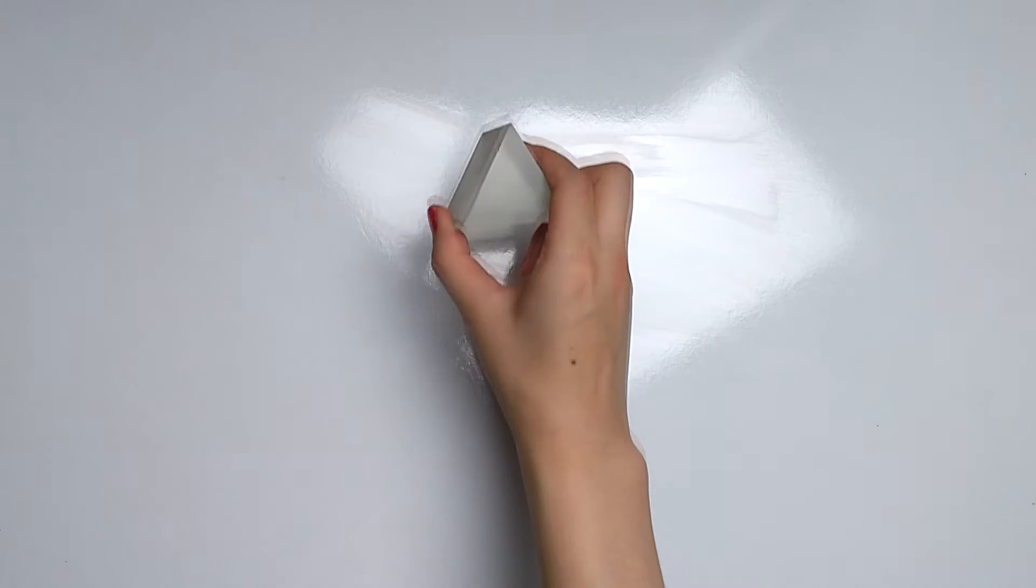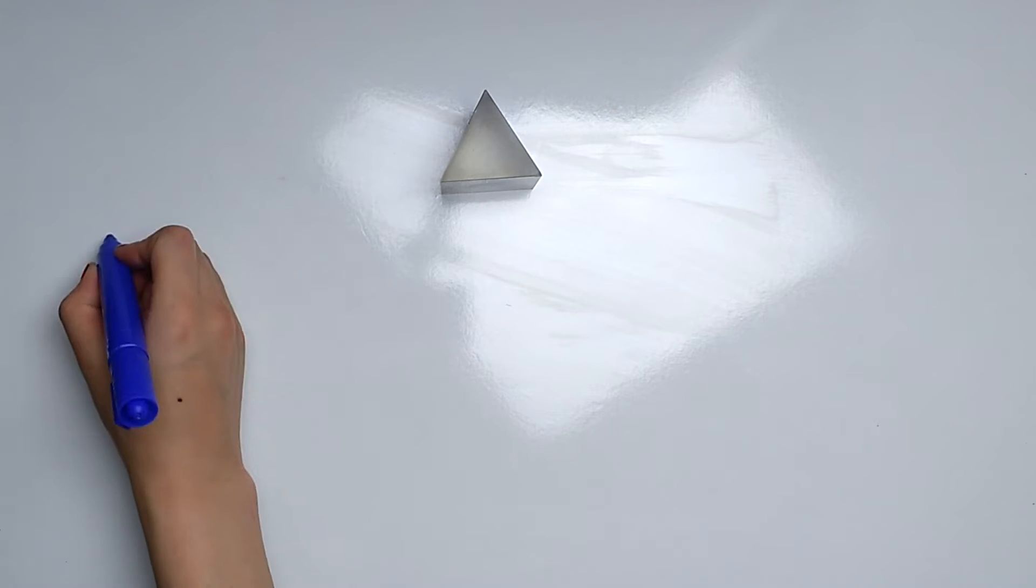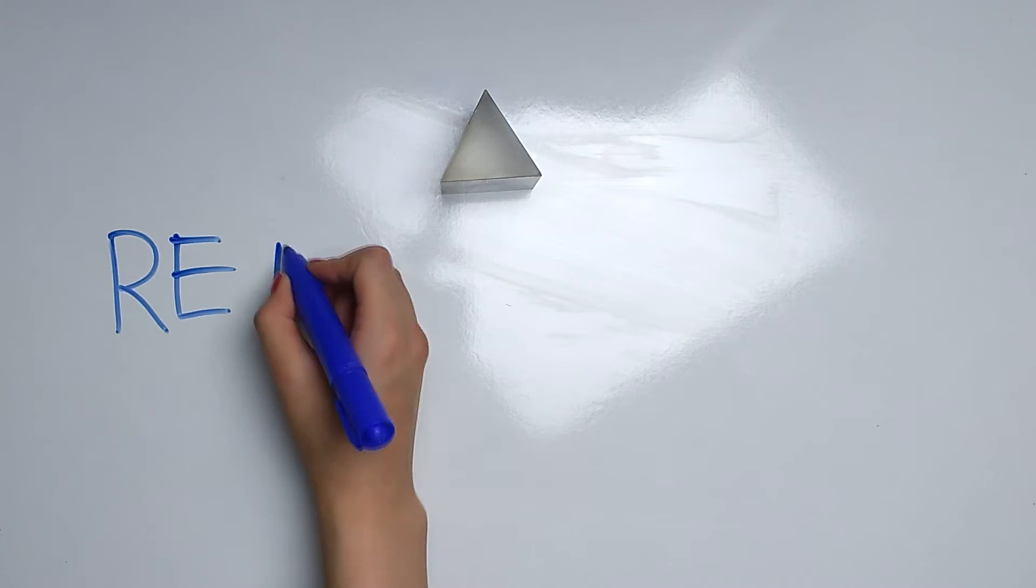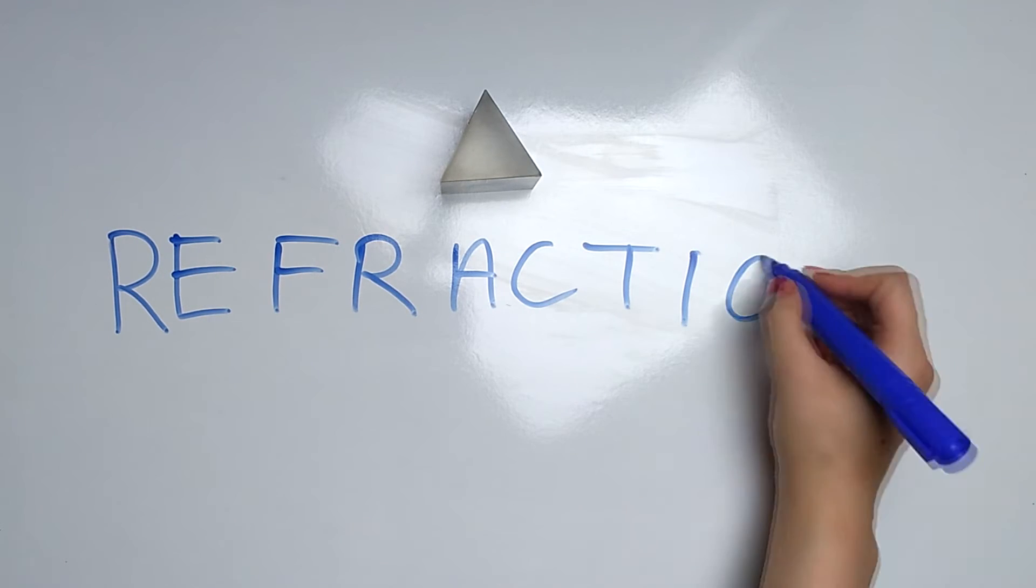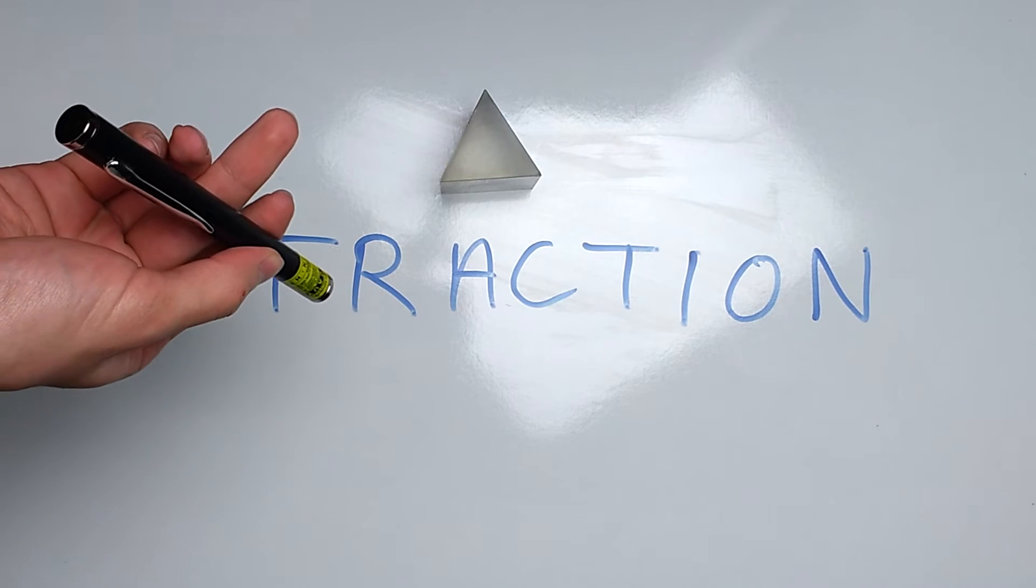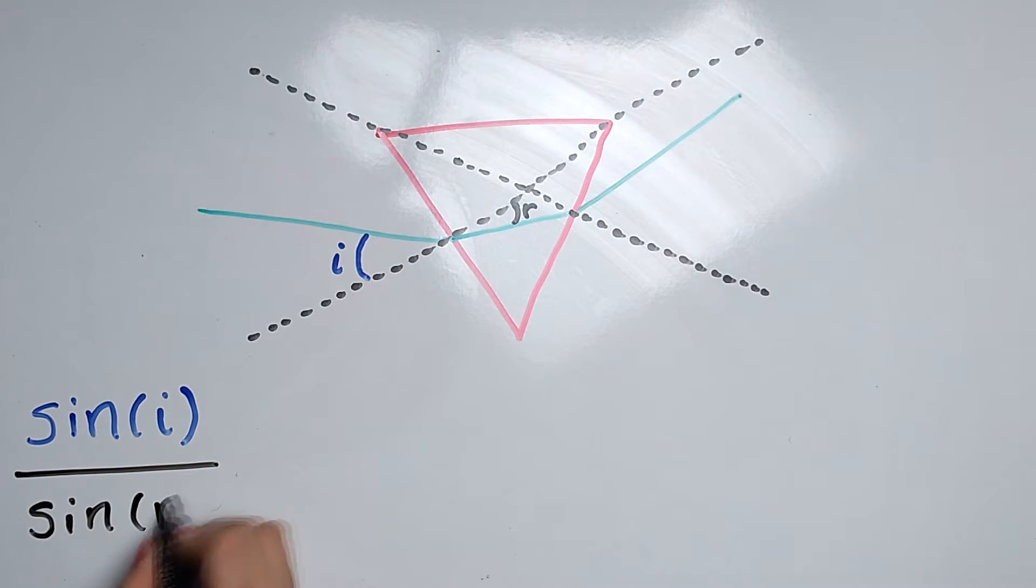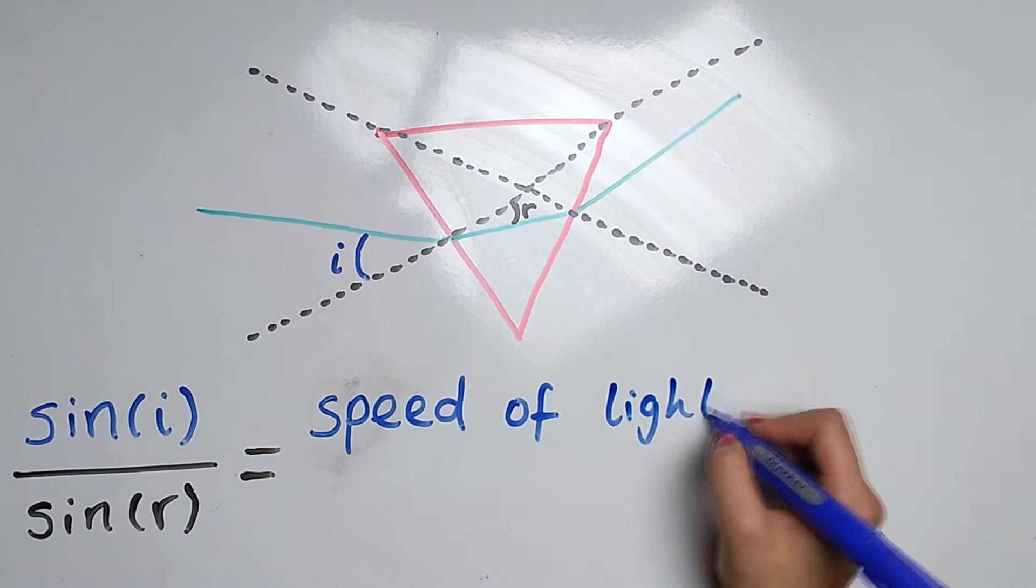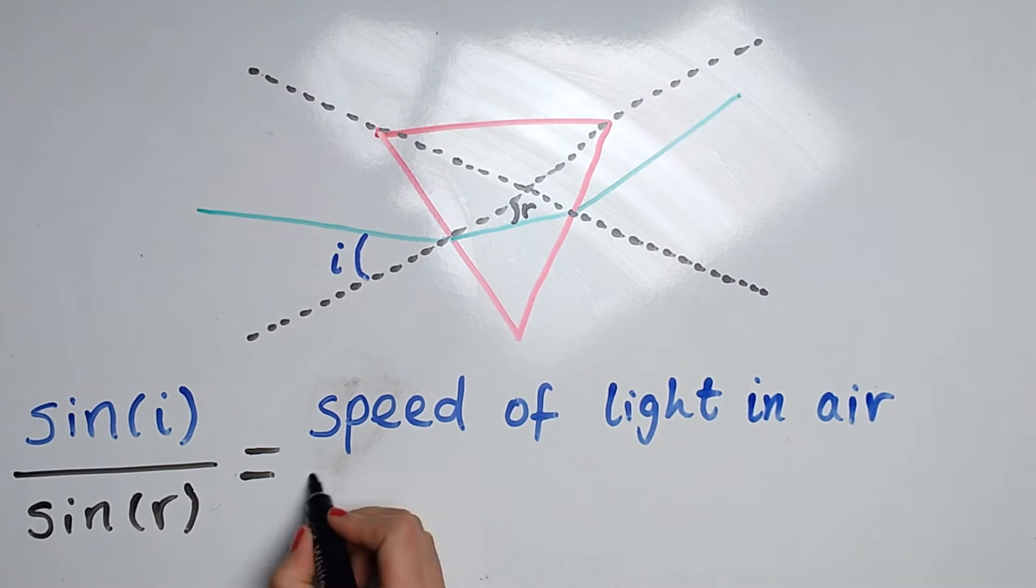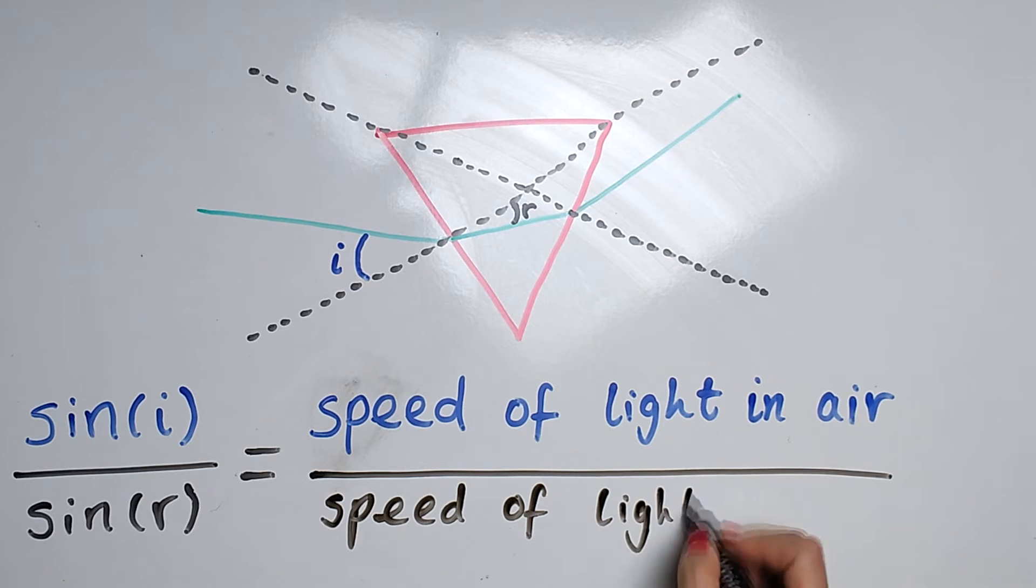And it begins with a piece of glass. The thing is, any transparent material has this amazing property of bending light, also known as refraction. We can demonstrate it with a laser beam. See? It bends. And it bends in a way that is very easy to predict with a little bit of mathematics. The relation is known as Snell's law, and it basically says that the ratio of sines of angles is proportional to the ratio of speeds of light in the materials involved. Although the details are slightly more involved, we can use this equation to calculate the shape of glass we need to collect multiple light rays at a single point.